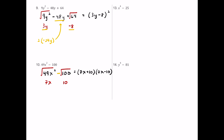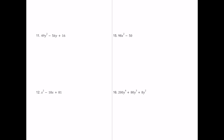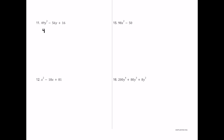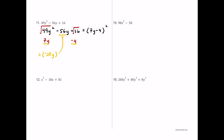For number eleven we have 49y squared minus 56y plus 16. It's not a difference of squares, so let's check if it's a perfect square trinomial. The square root of 49y squared is 7y. Because there's a negative sign in the middle term, we use negative 4 for the square root of 16. Multiplying 7y by negative 4 gives negative 28y, and doubling that gives negative 56, which matches the middle term. So this factors into (7y minus 4) squared — a perfect square trinomial.